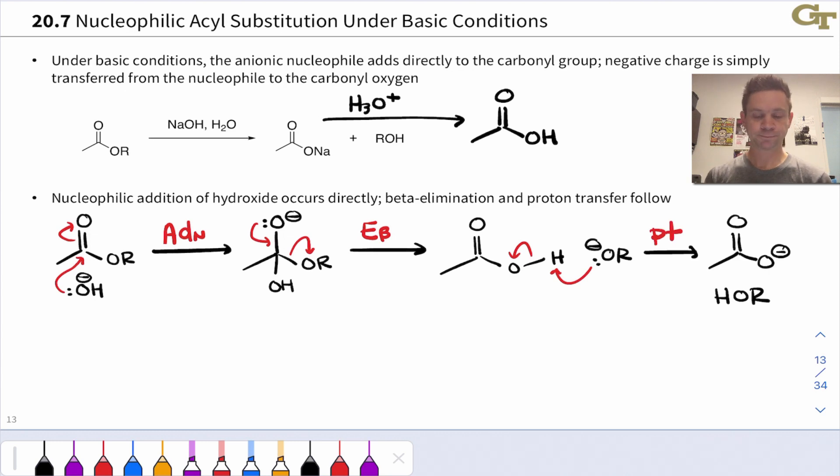OR- deprotonates the carboxylic acid very rapidly, since this is an extremely favorable proton transfer process, to give a carboxylate and HOR. So, in fact, this reaction isn't base-catalyzed at all. Since we get stuck at the anionic carboxylate product, we need a full equivalent of hydroxide base to get this reaction to go. And this is, again, common in nucleophilic acyl substitutions under basic conditions. The hydroxide anion adds in directly, so we need a full equivalent of hydroxide to do a lot of base hydrolysis type of chemistry with carboxylic acid derivatives.